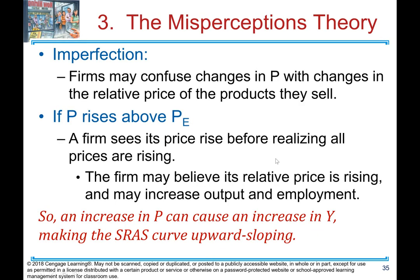The misperceptions theory: the imperfection is that firms may confuse changes in the overall price level with changes in the relative price of the products they sell. If the price level rises above the expected price, a firm sees its price rise before realizing all prices are rising. The firm may believe its relative price is rising and increase output and employment. So an increase in price can cause an increase in output, making the short-run aggregate supply curve upward sloping.